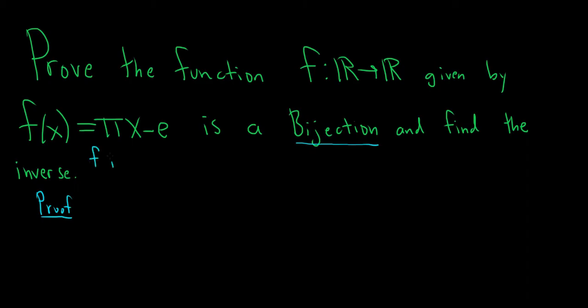f is one-to-one or injective if whenever we have f(a) = f(b) for any a, b, then a equals b. So that's what it means for a function to be one-to-one. When you have equal outputs, you will get equal inputs.